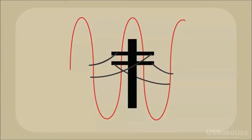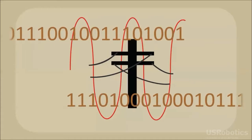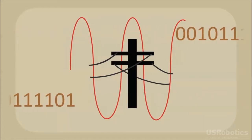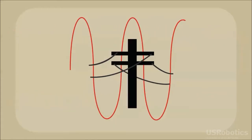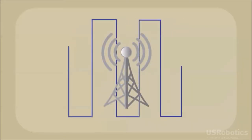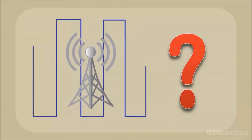You've got remote equipment that's been sending data over telephone lines for years, maybe for decades. Now it's time to cut the phone cord and switch to cellular. But can the conversion be simple without replacing or reprogramming everything?